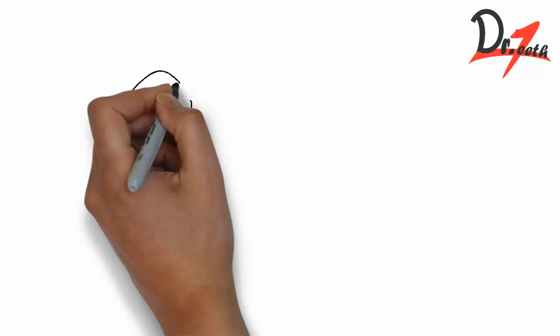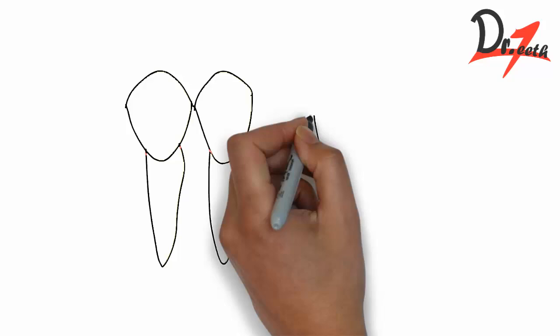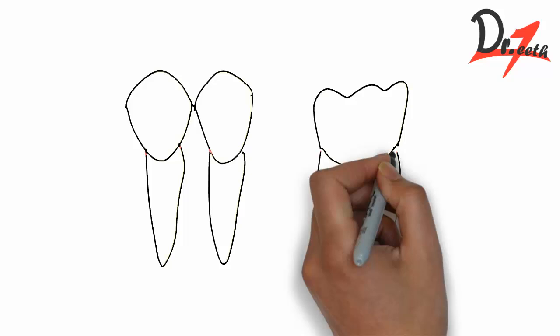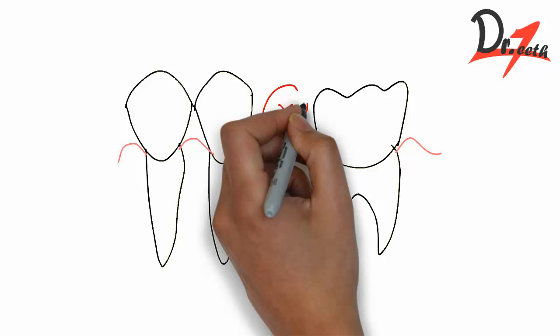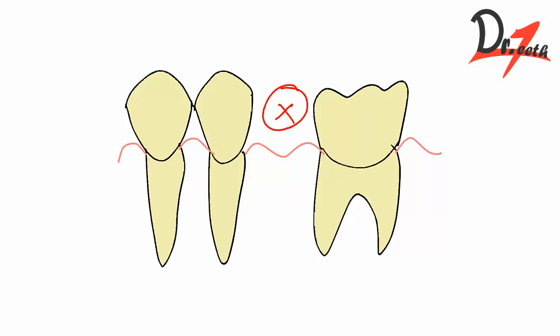Whenever a patient comes to you and has some of his teeth missing, as a dentist we are left with some options. Either we can give him a removable denture, which means he can remove it, or we can give him something which is fixed, meaning the patient cannot remove it. That is called the fixed partial denture.